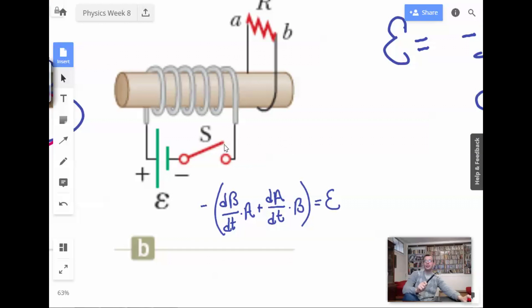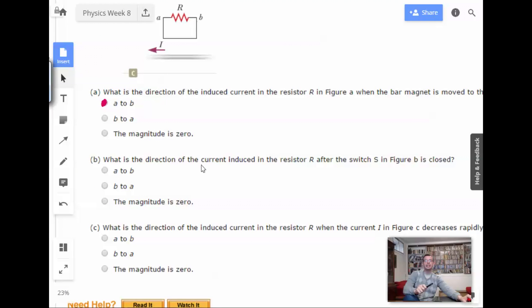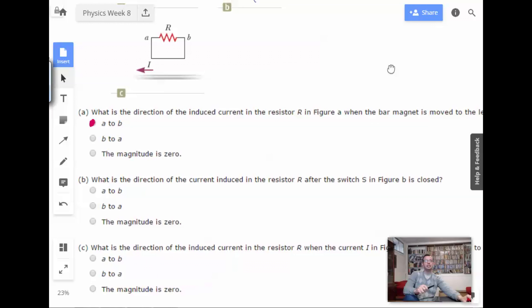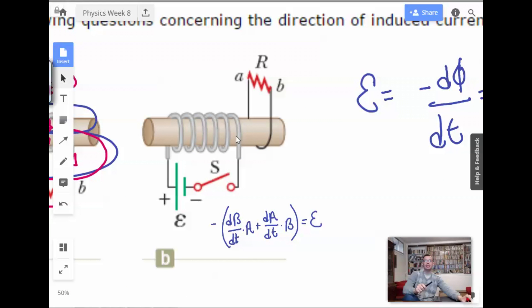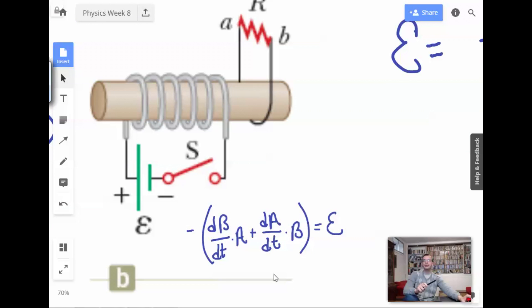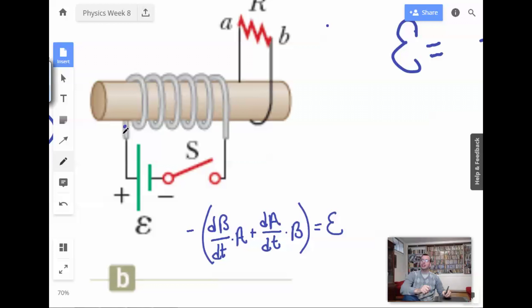So we close this wire. This is probably just iron or something to make the solenoid better. Something to do with the inductance. What is the direction of the current induced in the resistor R after the switch S in figure B is closed? Okay. So I close the switch. Creates a current through here. Creates a magnetic field. Okay. So looking at this right here, I'm going to start with blue. So I'll do blue for the original portion and then gold, not gold, pink, red, whatever for the change.